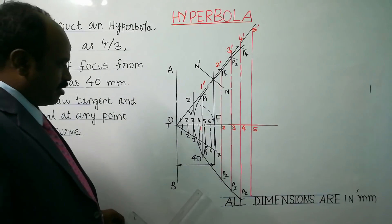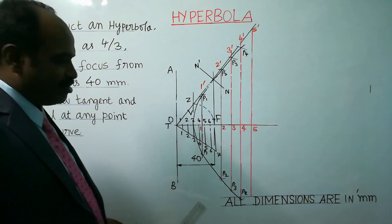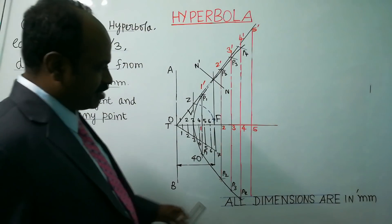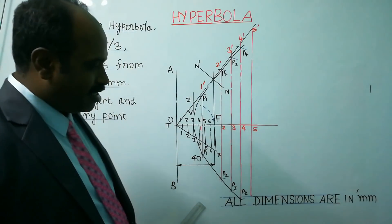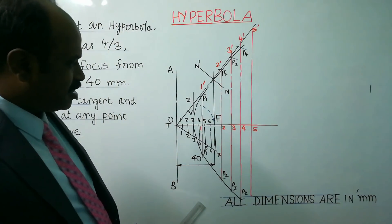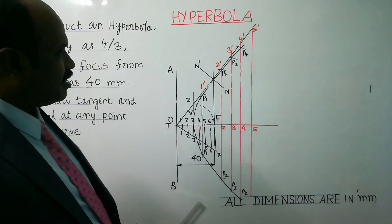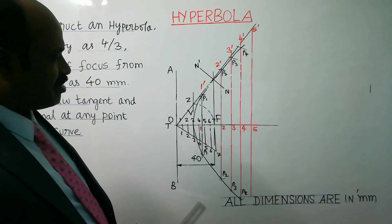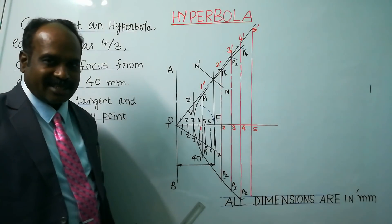Finally, all dimensions are in mm, written below the diagram at the right side bottom. This completes the curve called hyperbolic curve. Thank you for listening.